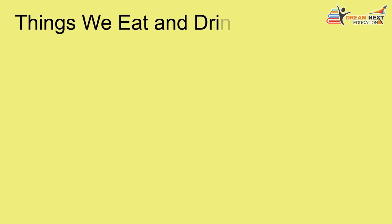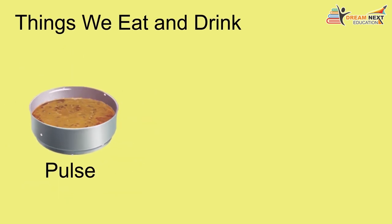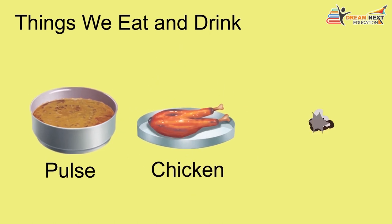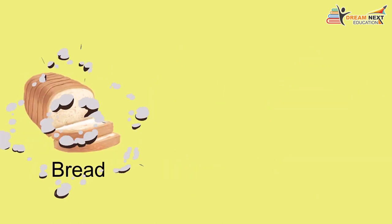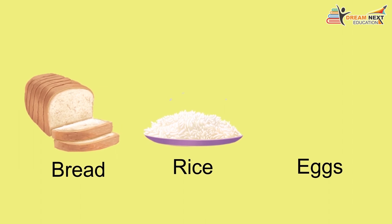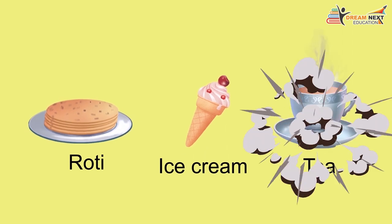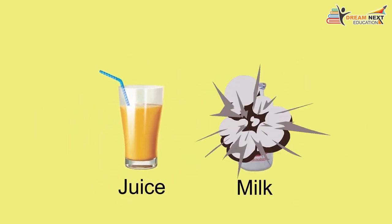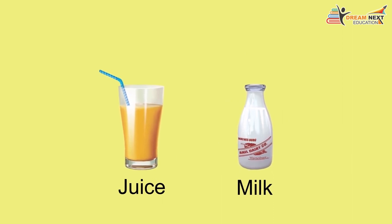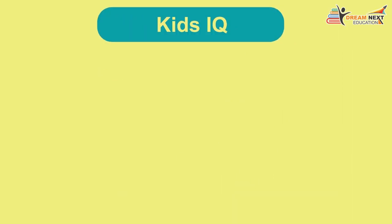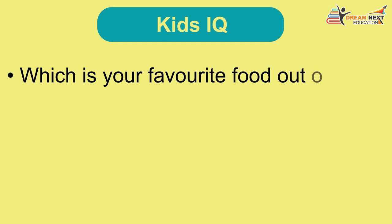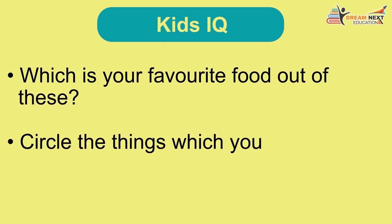Things we eat and drink: salt, chicken, cake, bread, rice, eggs, roti, ice cream, tea, juice, milk. Kids IQ: Which is your favorite food out of these? Circle the things which you drink.